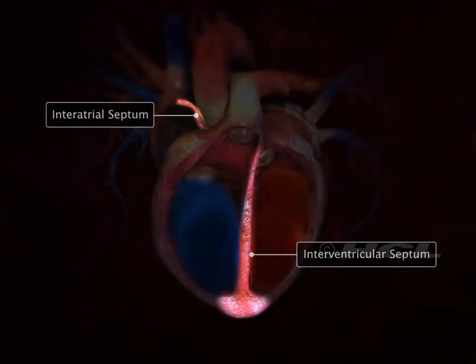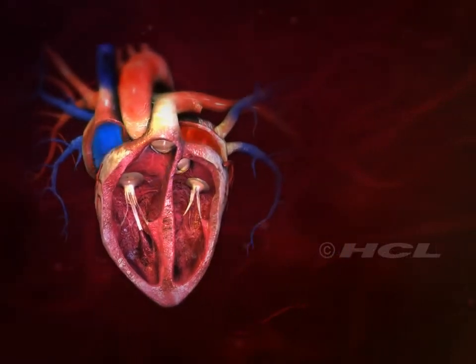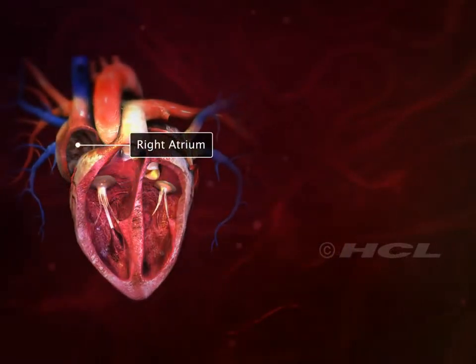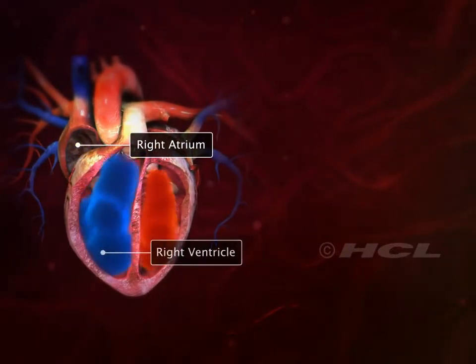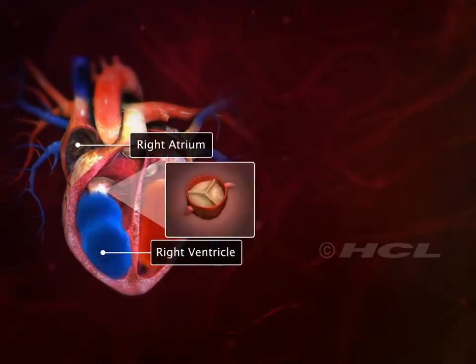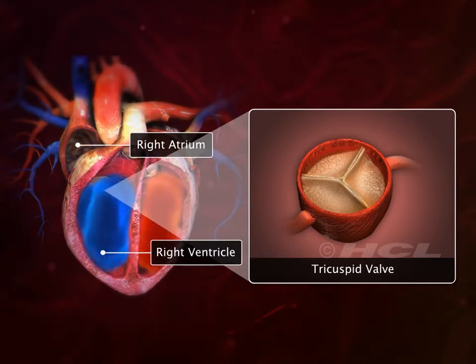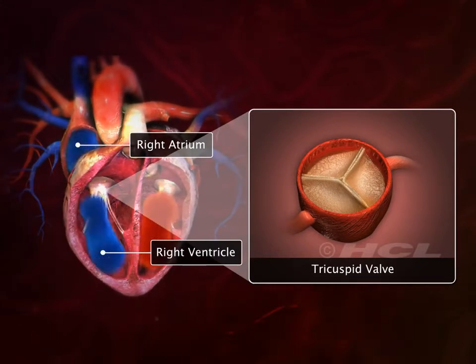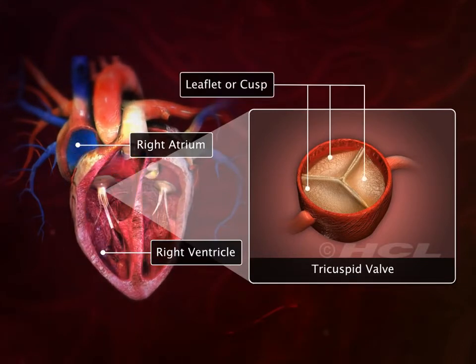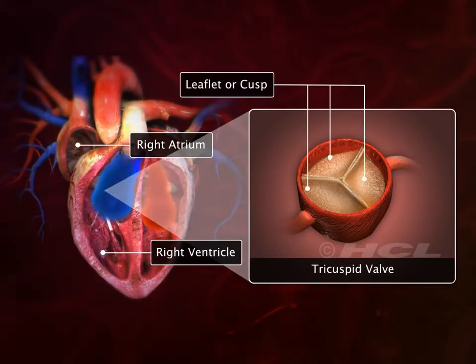The right atrium and right ventricle are connected through a tricuspid valve. As the name suggests, it has three leaflets or cusps.